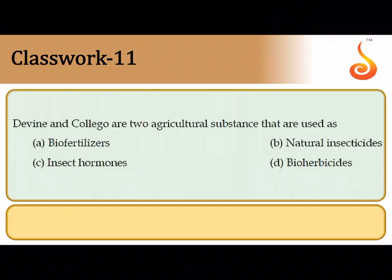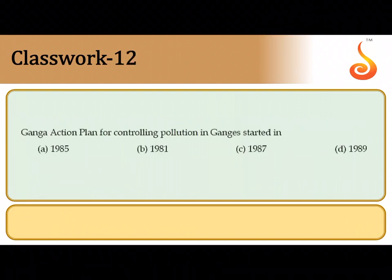The eleventh question confirms that Devine and Collego are two famous agricultural substances routinely used as bio-herbicides for the destruction of unwanted crops or weeds. The twelfth question asks when the Ganga Action Plan was launched — it was launched in June 1985, so the correct answer is option A.